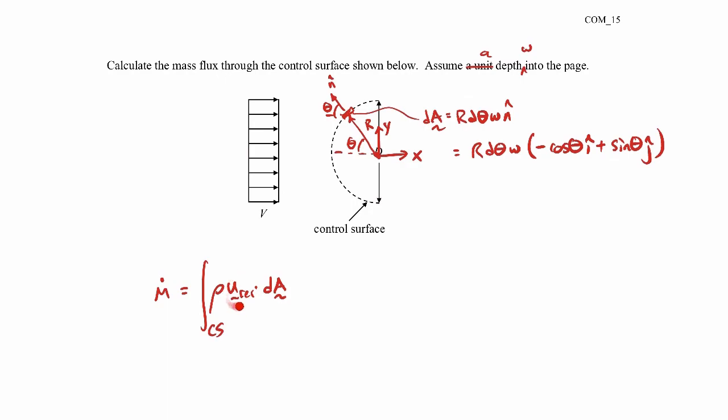Now the velocity, relative velocity term here is just the velocity of the fluid relative to the control surface. So let me write that down. U_rel is the velocity of the fluid minus the velocity of the control surface. Well, the control surface velocity is zero. And the fluid velocity will just be v i hat, right? It's v here in the positive i hat direction.